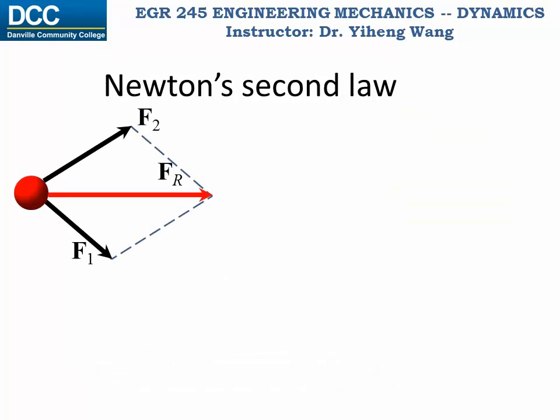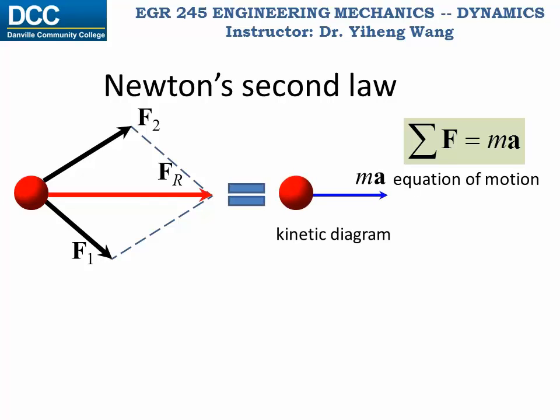But if the forces acting on the object has a non-zero resultant force, then the resultant force equals the mass of the object times acceleration. This is known as the equation of motion. It can be represented by a kinetic diagram, and the vector ma is called the inertia force, since it is equivalent to a force vector. So it can be rewritten this way to show that acceleration is the result of unbalanced force.